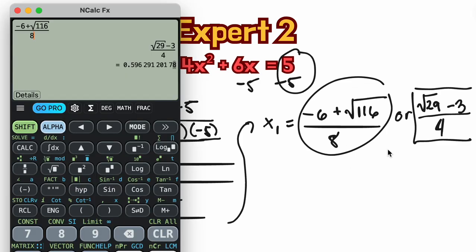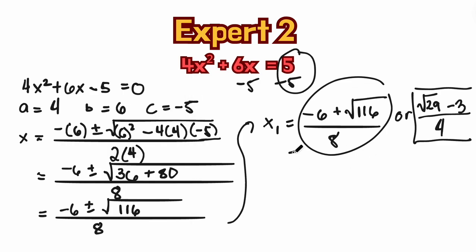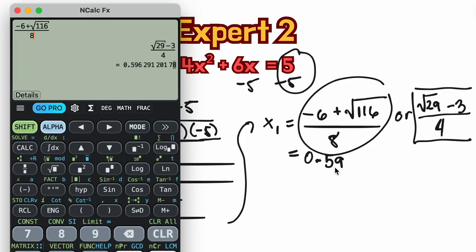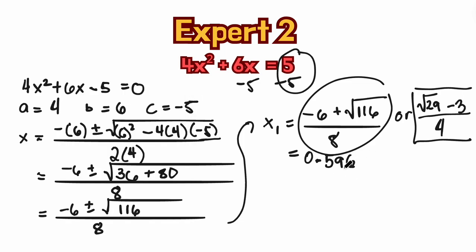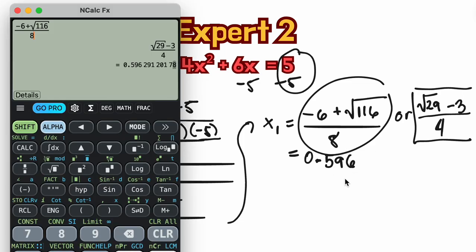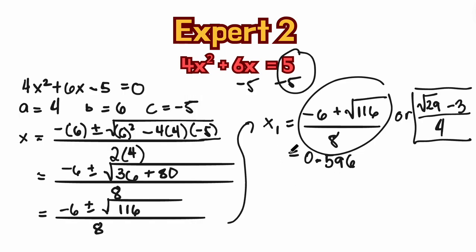Or you can use the decimal form as well. So the decimal form would be 0.596. So I use the three digits here. And this is one form of the answer, for the root number 1.